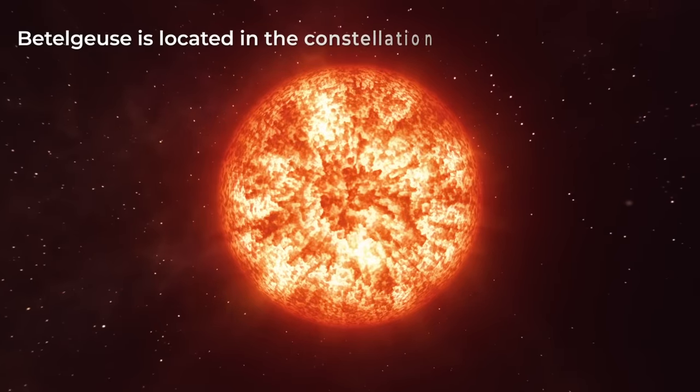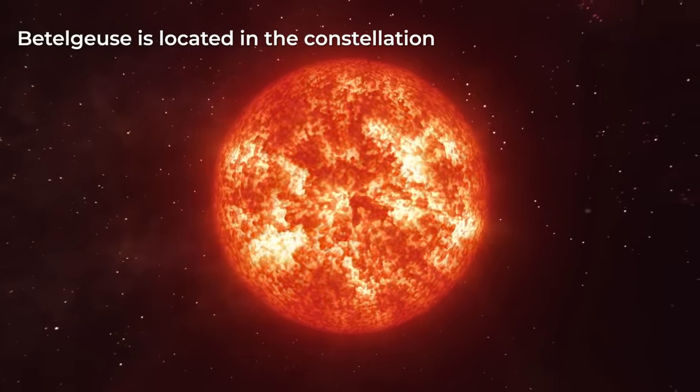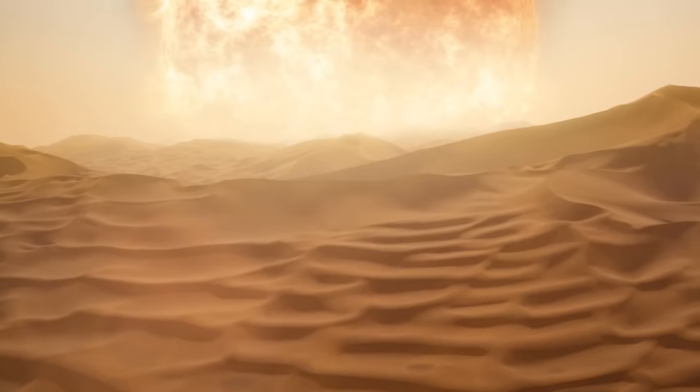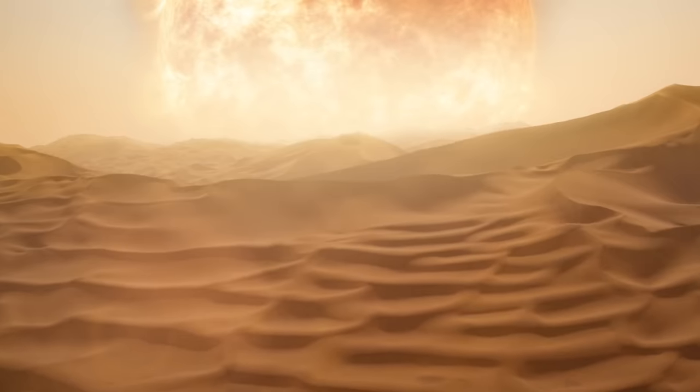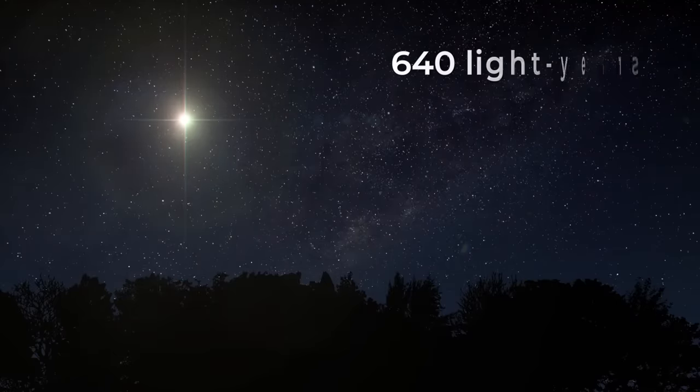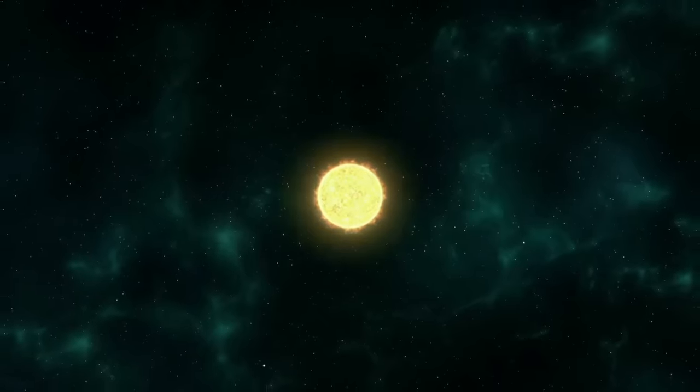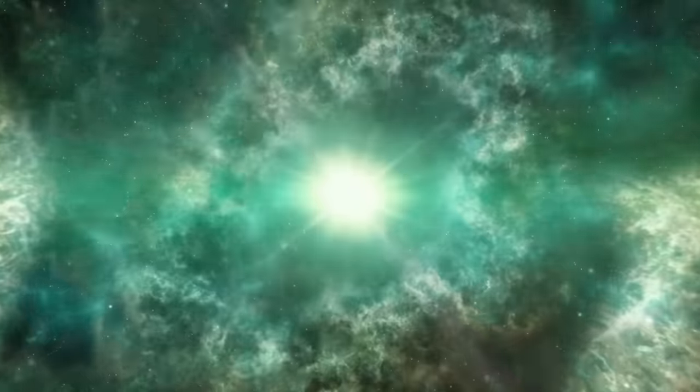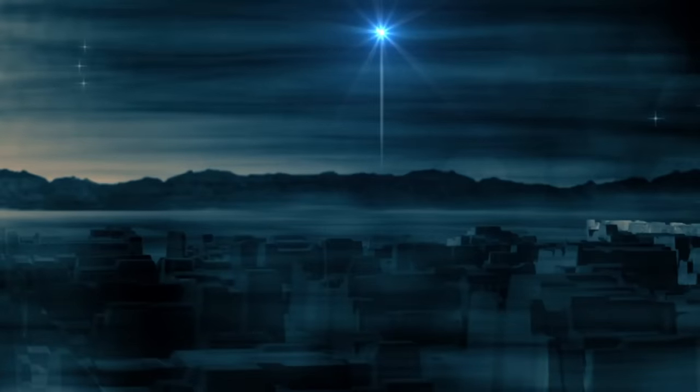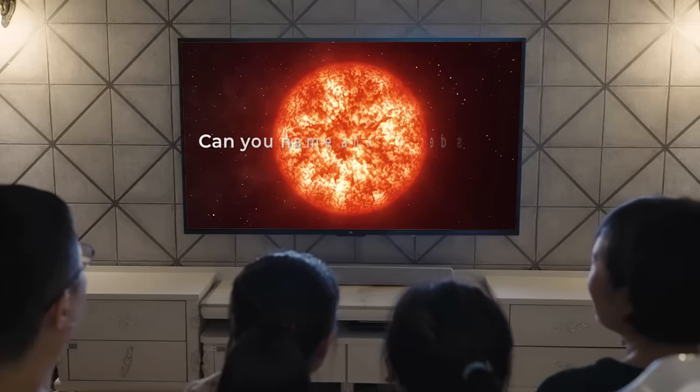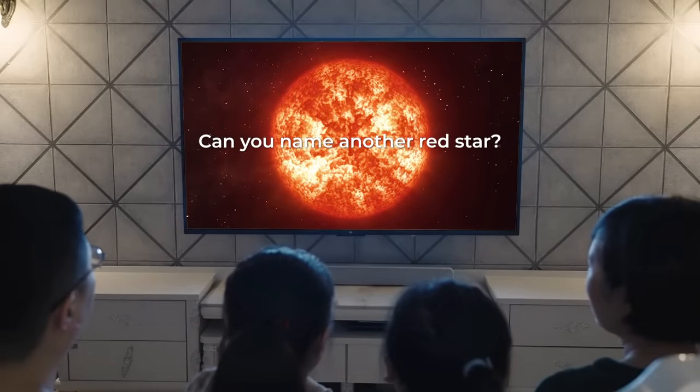Betelgeuse, located in the constellation Orion, is a red supergiant star that is about 1,000 times larger than the sun. It is one of the largest known and if it were to replace our sun, its surface would extend beyond the orbit of Jupiter. Betelgeuse is also one of the closest red supergiants to Earth at a distance of about 640 light years. It is expected to explode as a supernova in the next million years, which will be visible from Earth and will likely be one of the most spectacular astronomical events of our time. And what about you? Can you name another red star? Let us know in the comments.